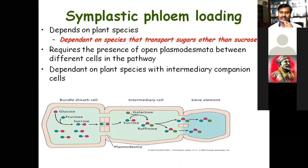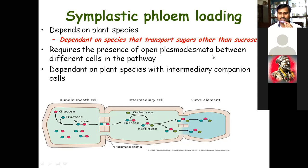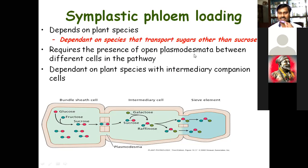Symplast flow is dependent on the species that transport sugar. Sucrose requires the presence of open plasmodesmata. Plasmodesmata are minute openings in the cell wall; through these cell wall openings, movement of food material takes place by the symplast way. Symplast way — food material moves; apoplast way — water moves.